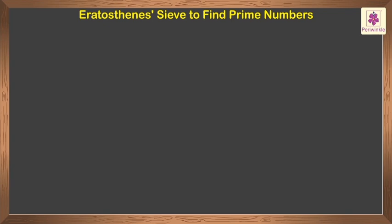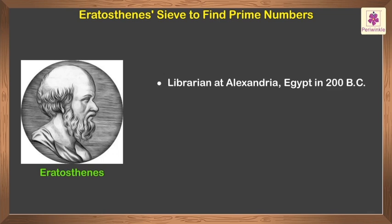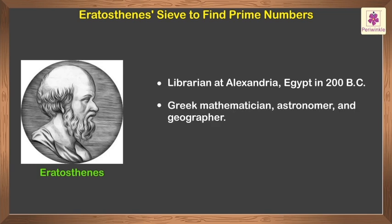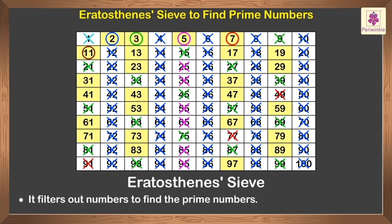Eratosthenes' Sieve to find prime numbers. Eratosthenes was a librarian at Alexandria, Egypt in 200 BC. He was a Greek mathematician, astronomer, and geographer. He invented a method to find prime numbers that is still used today. This method is called Eratosthenes' Sieve. It filters out numbers to find the prime numbers.